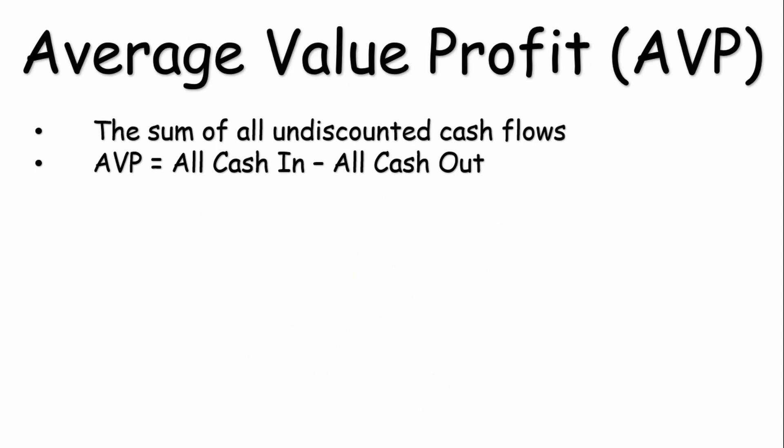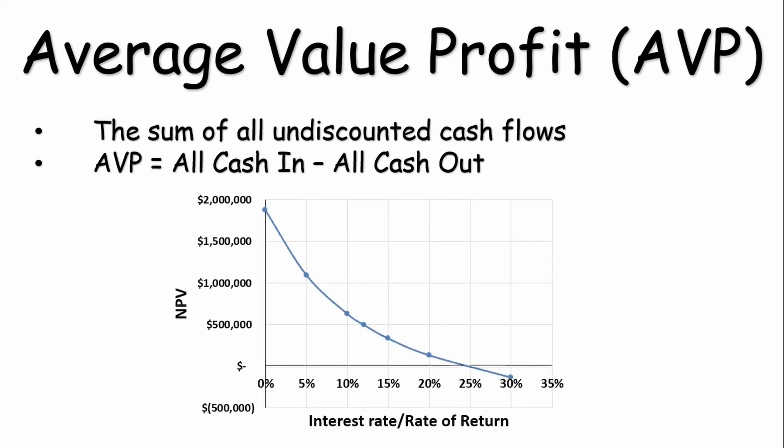The first one is average value profit (AVP), which is simply the sum of all discounted cash flows. You just use simple addition and subtraction — AVP equals all cash in minus all cash out. On a present value profile plot, your average value profit would be the y-intercept, corresponding to an internal interest rate of zero percent, whereas IRR is the x-intercept.